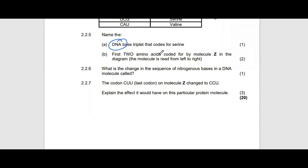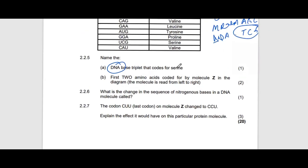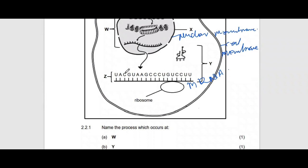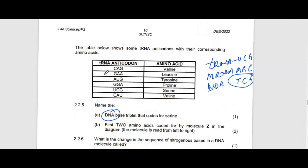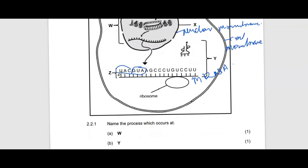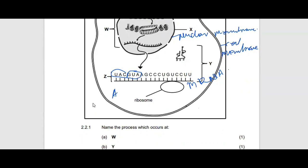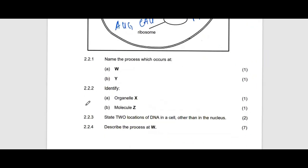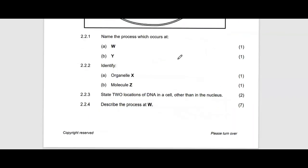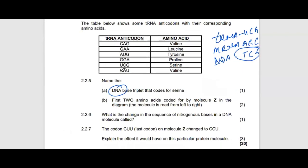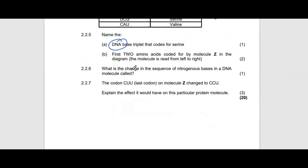The first two amino acids coded by molecule Z (mRNA) from left to right: converting the tRNA anticodon, A pairs with U and G gives AUG — from the table, AUG codes for methionine/tyrosine. The next codon is CAU — from the table, CAU codes for histidine/valine. A change in the sequence of nitrogenous bases in the DNA molecule is called gene mutation, because the bases have been changed.